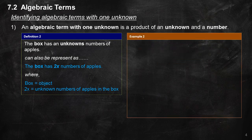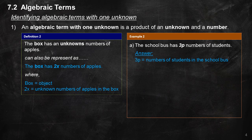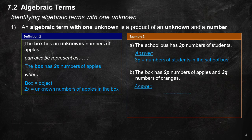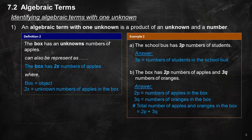Example 2A: The school bus has 3P numbers of students. Answer: 3P equals the number of students in the school bus. Example 2B: The box has 2P numbers of apples and 3Q numbers of oranges. Answer: 2P equals the number of apples in the box; 3Q equals the number of oranges in the box. The total number of apples and oranges in the box equals 2P plus 3Q.